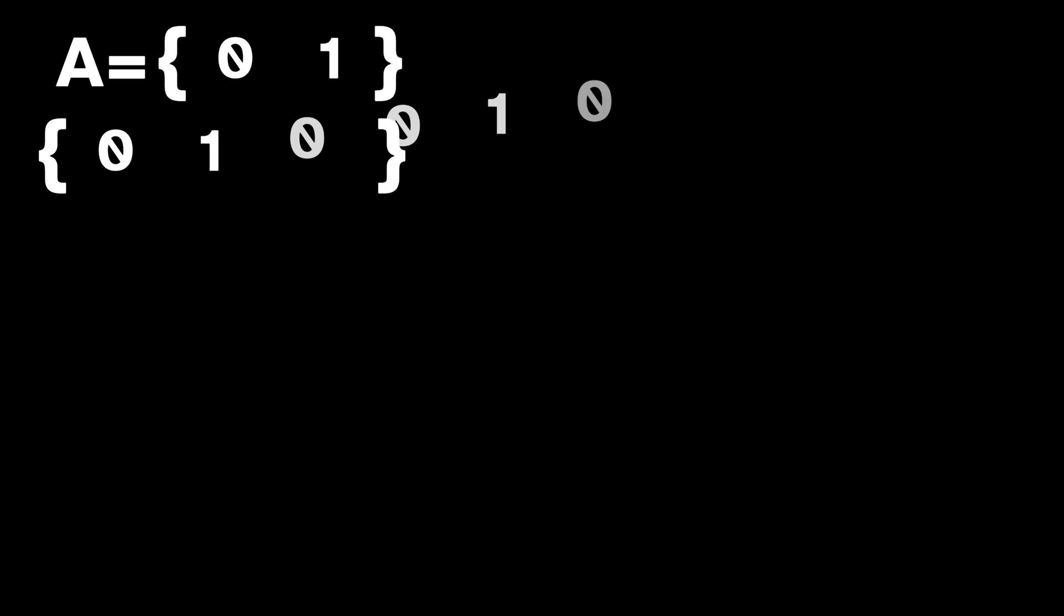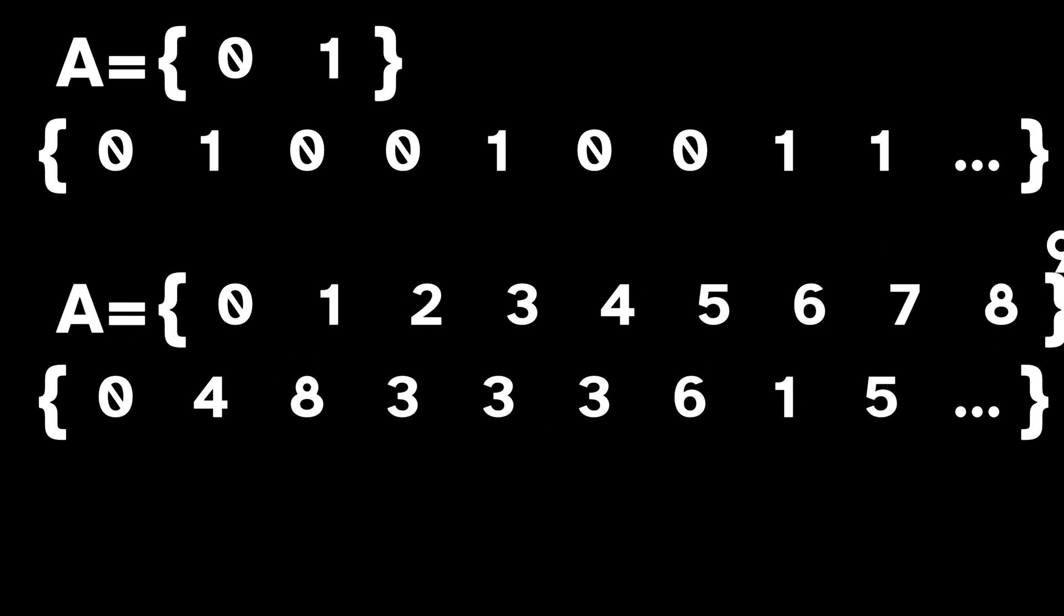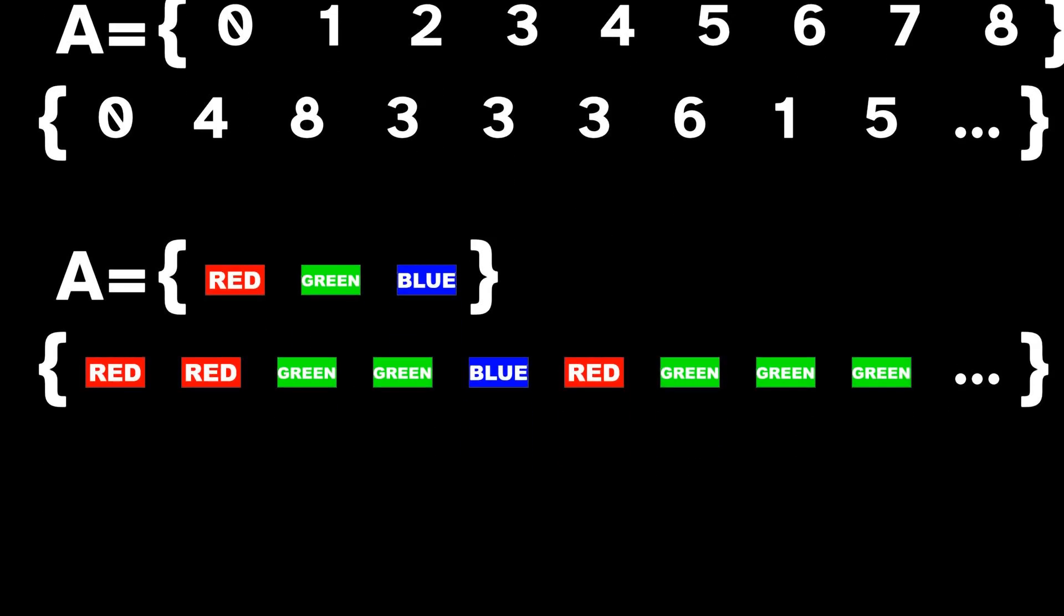It all starts with an alphabet of symbols. In the case of our previous example, that alphabet was just two symbols, 0 and 1. But the alphabet could be anything. It could be all the digits from 0 to 9, it could be a set of three colors, it could even be the keys on a piano. Anything.